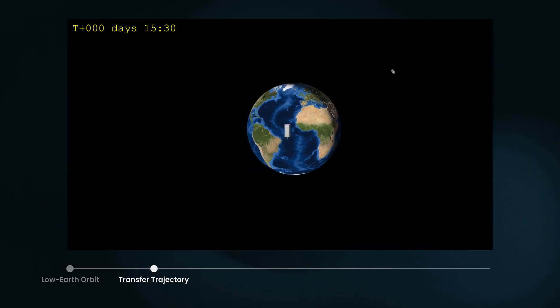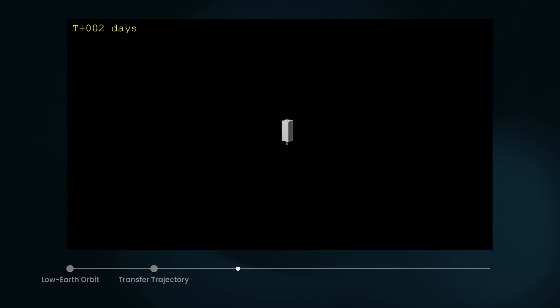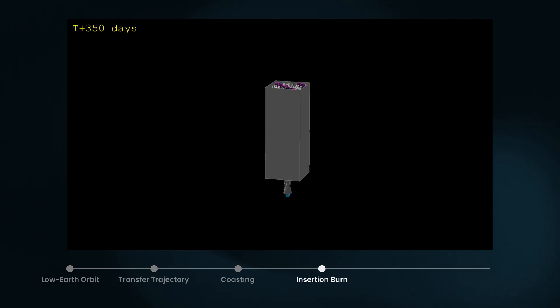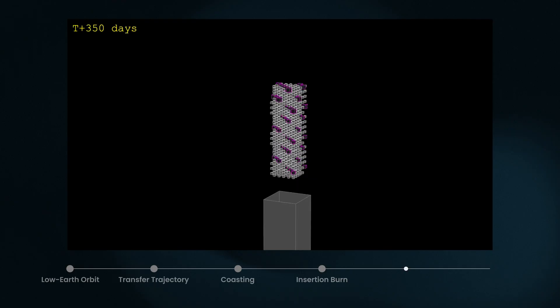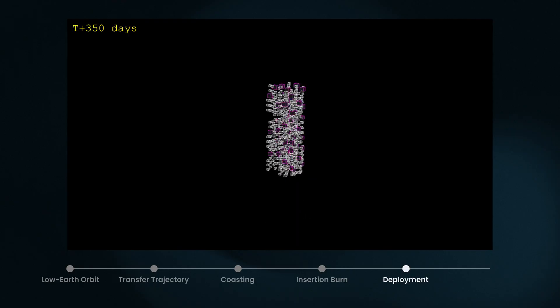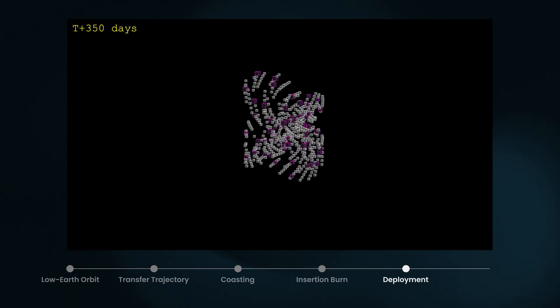A large service module representing nearly half the payload mass is necessary to bring the whole scientific payload to its final operational orbit. Once there, the service module will execute an insertion burn and then be discarded. Onboard thrusters will then be used for deployment, no more than one meter per second of delta V per satellite and station keeping, less than two meters per second per year per satellite.